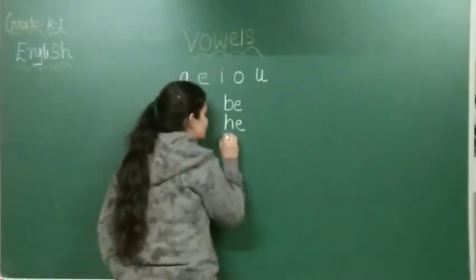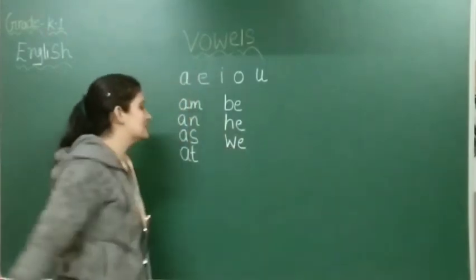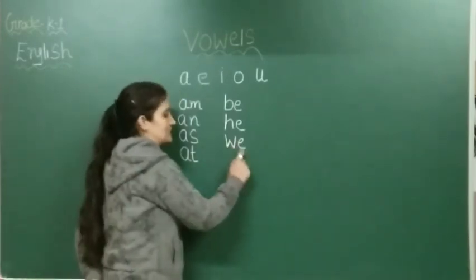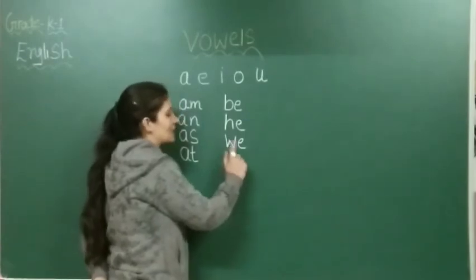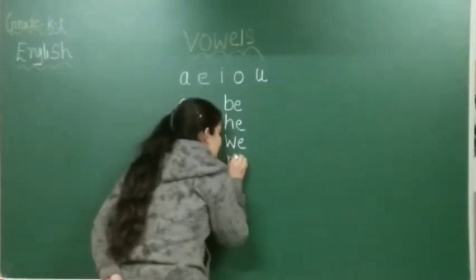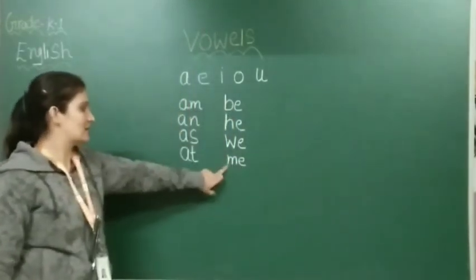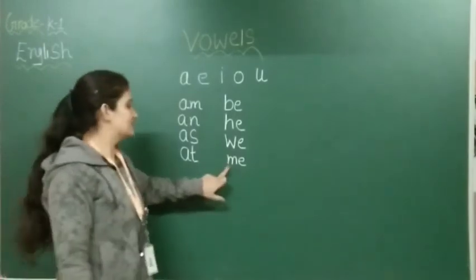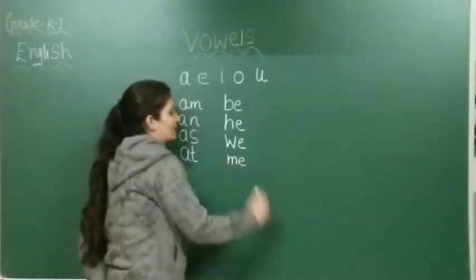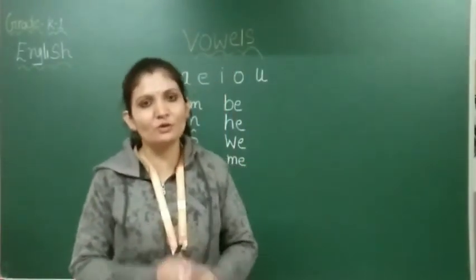Next letter is W, E — WE. In phonics, W says 'w', E says 'e' — WE. Then M, E — ME. In phonics, M says 'm', E says 'e' — ME. The revision of E-sound words is completed.